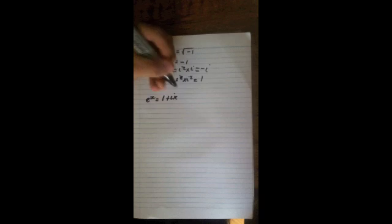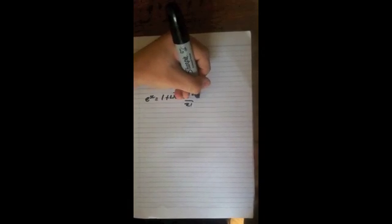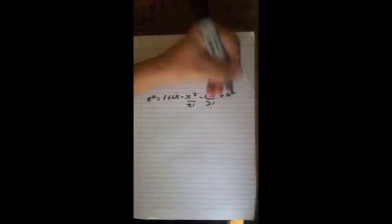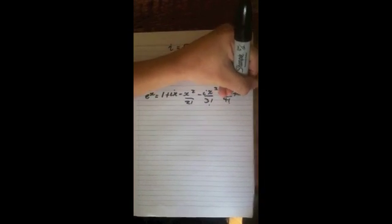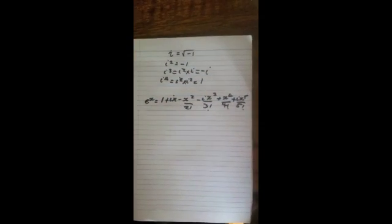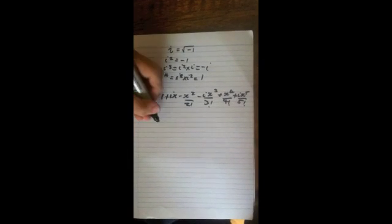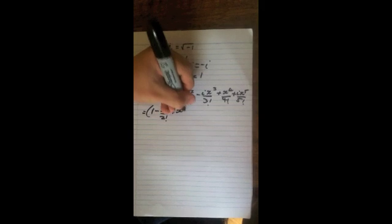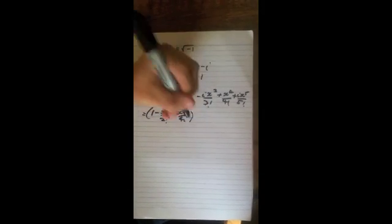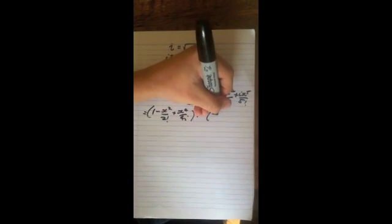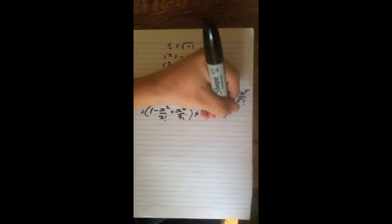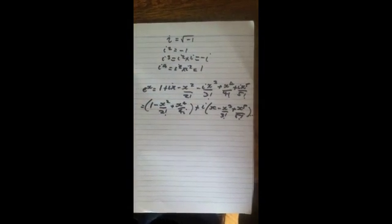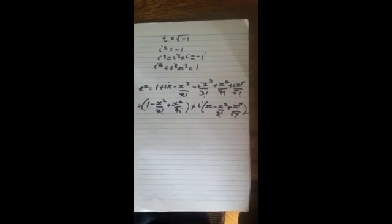Bearing this in mind, the expansion for e to the ix can be rewritten as 1 plus ix minus x squared on 2 factorial minus ix cubed on 3 factorial plus x to the power of 4 on 4 factorial plus ix to the power of 5 on 5 factorial. Separating and grouping real and imaginary components, e to the ix can be rewritten as (1 minus x squared on 2 factorial plus x to the 4 on 4 factorial) plus i times (x minus x cubed on 3 factorial plus x to the 5 on 5 factorial). It can be seen that all even powers of x are real components and all odd powers of x are imaginary components.